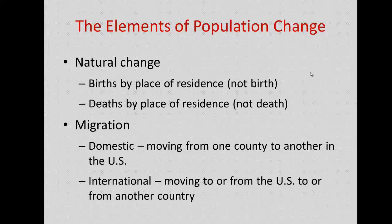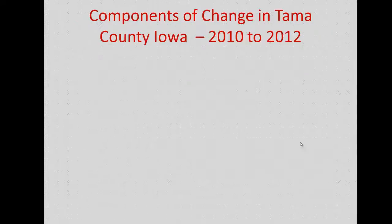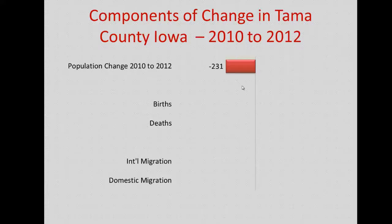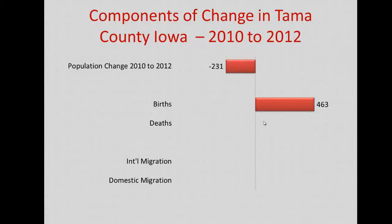Let's use Tama County, Iowa to illustrate the components of change. Tama County's population declined over the 2010 to 2012 period by 231 persons. The county realized 463 births during that period, but also 464 deaths. Natural change — births minus deaths — means this county is technically in natural decline, with more deaths than births.